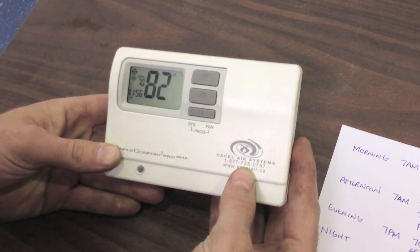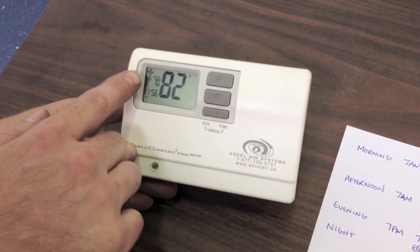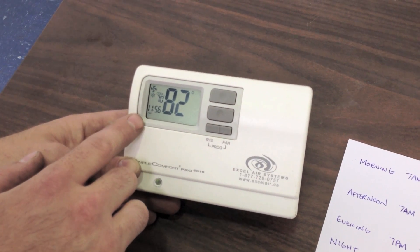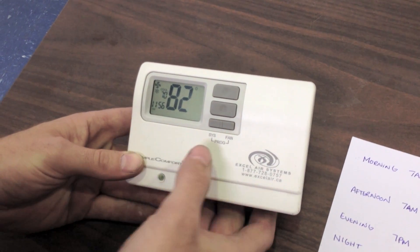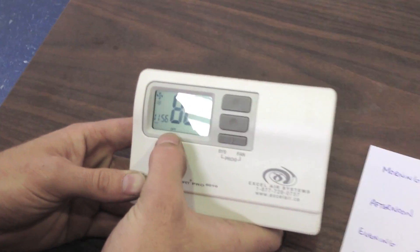We're going to go to our thermostat. The first thing we want to do is notice our numbers, our room set temperature, what we have our cool set to, and the time of day. To program or set anything on this thermostat, you need to push the system button until the word off appears.